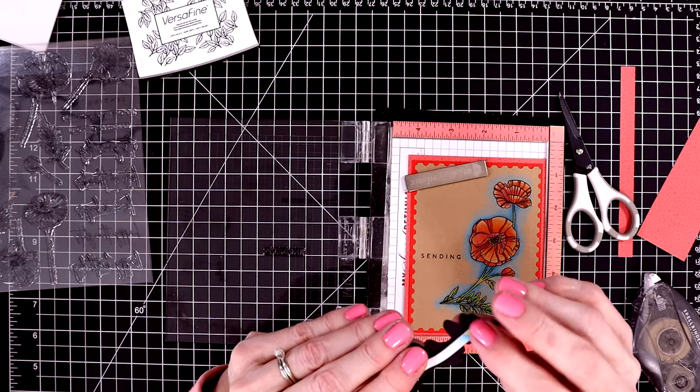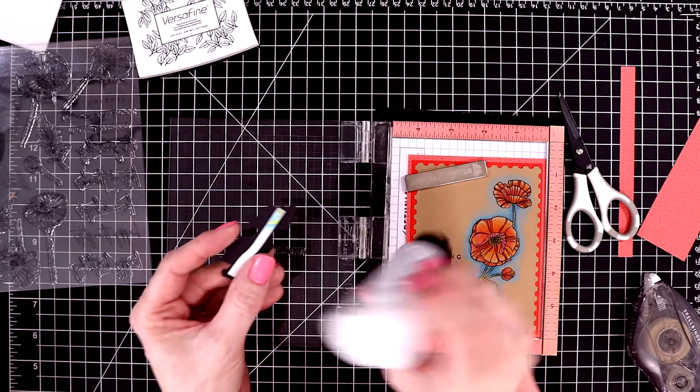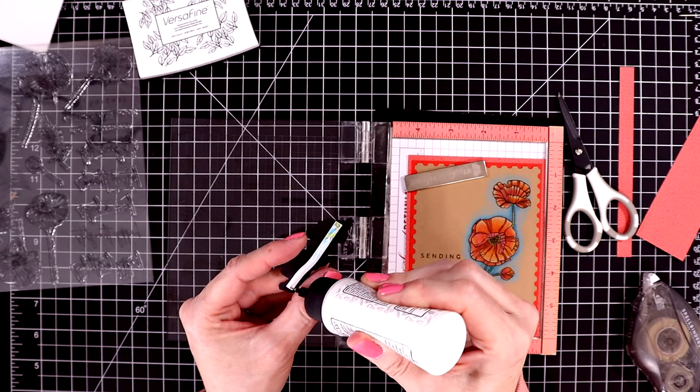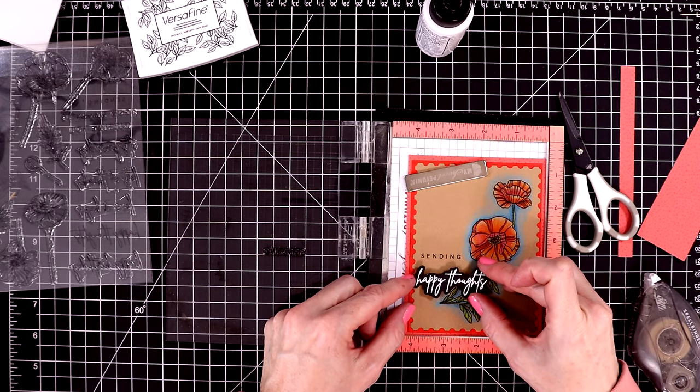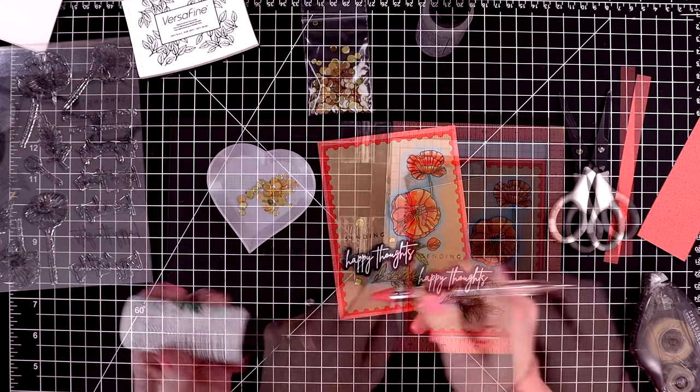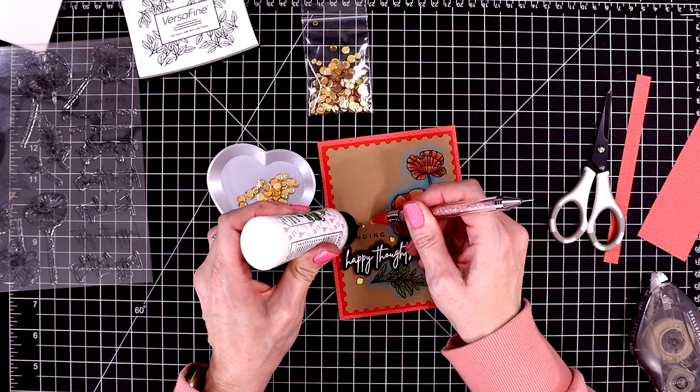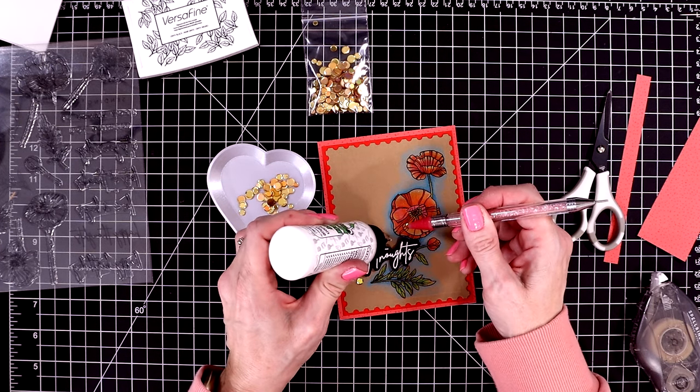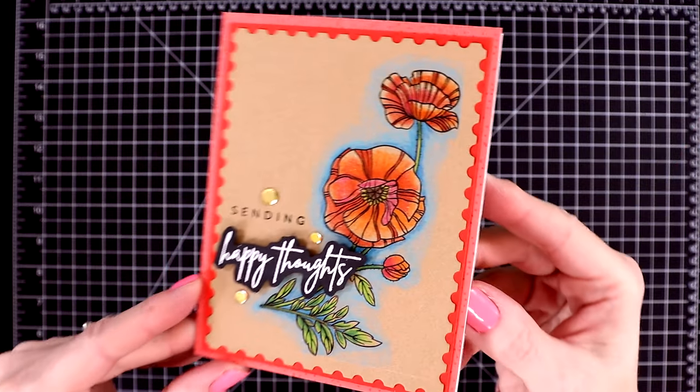Now I just have to reattach this, and it kind of pulled up some of the colored pencil, so I'm going to add a little bit of glue over it so it's nice and sticky. And then put that back down on the card. I'm going to glue on a few of the sequins around the sentiment.